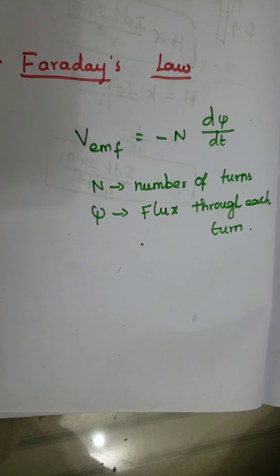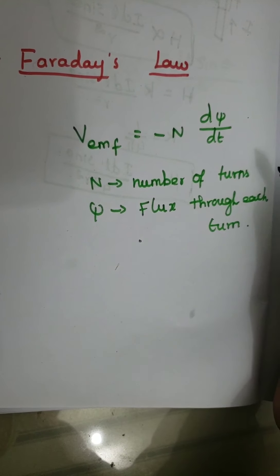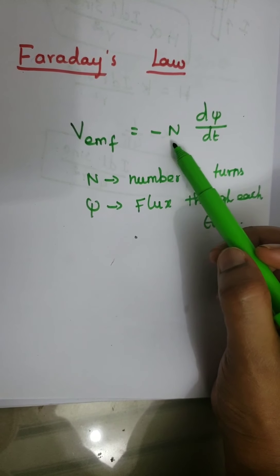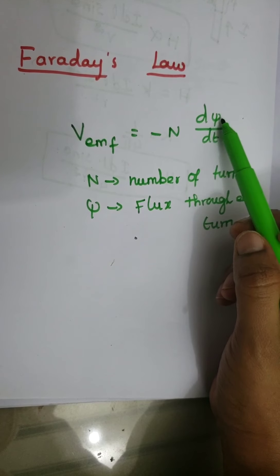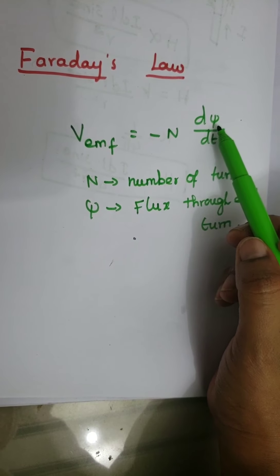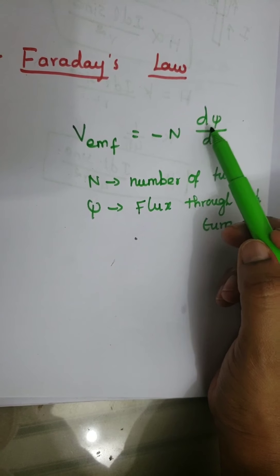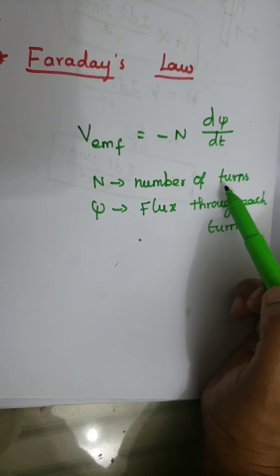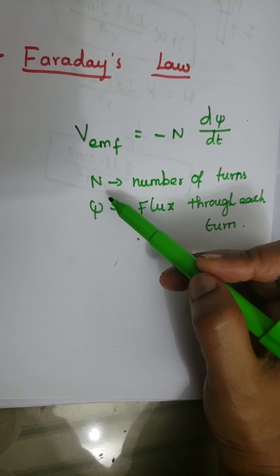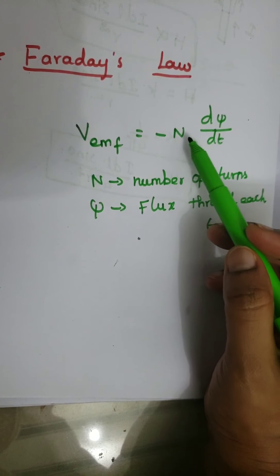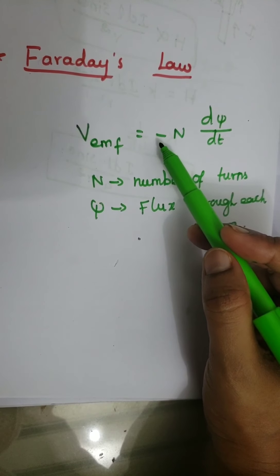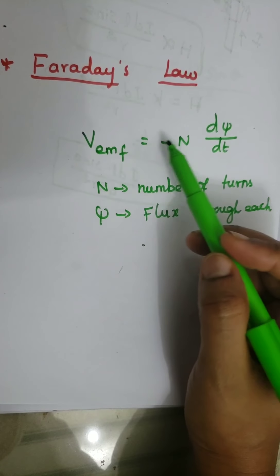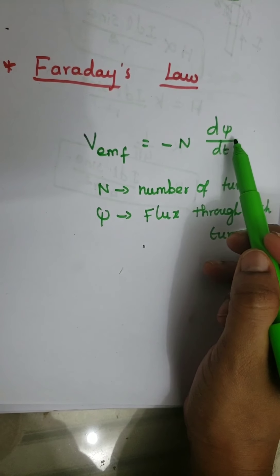Next we will see about Faraday's law. This law states that the induced EMF in volts is equal to the time rate of change of magnetic flux linked by that circuit. Here N is the number of turns and psi is the flux through each turn. The negative sign means that the induced EMF is opposite in direction to that flux.